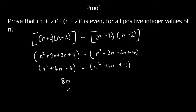We could say the 8 times table is all even, but we could also write it as 2 times 4n. So because it's 2 times something, and the 2 times table is even, anything times 2 is an even number. Therefore, we've proven it.